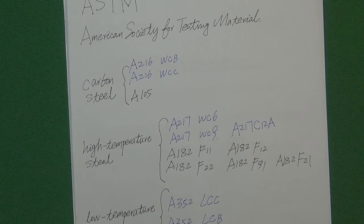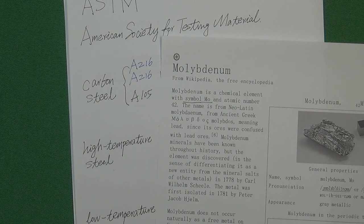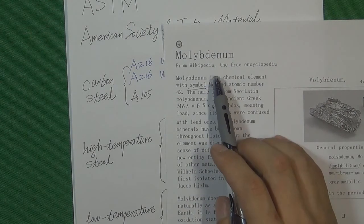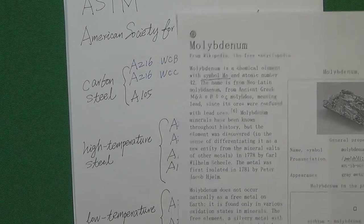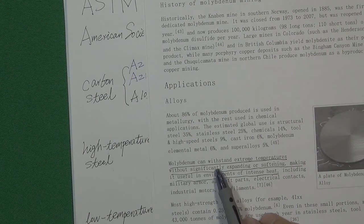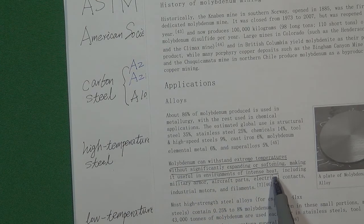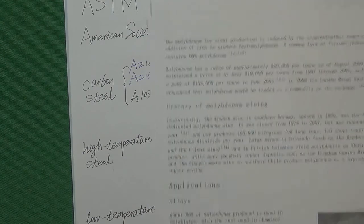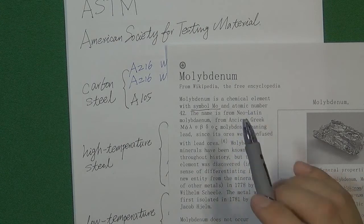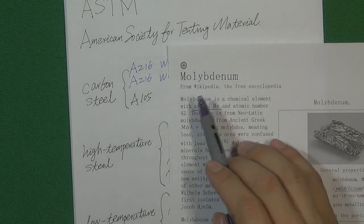So let's look at what chemical elements are inside high temperature steel. The first one is molybdenum, a very important chemical element in high temperature steel, with element symbol Mo. According to Wikipedia, molybdenum can withstand extreme heat without significantly expanding or softening, making it useful in environments of intense heat. This means molybdenum improves the steel's mechanical strength in high temperature environments.